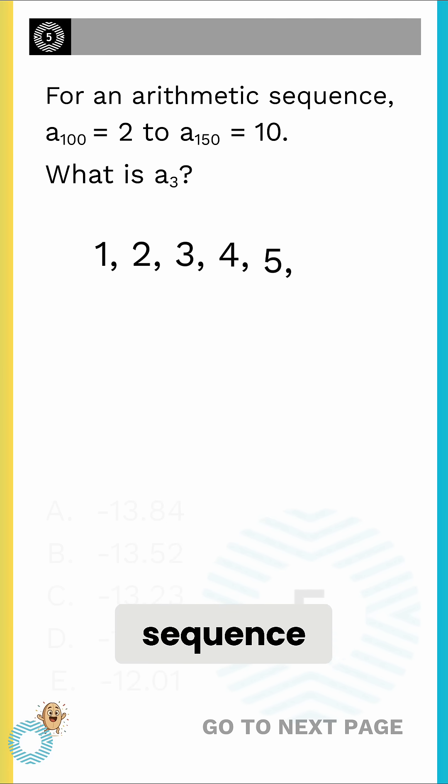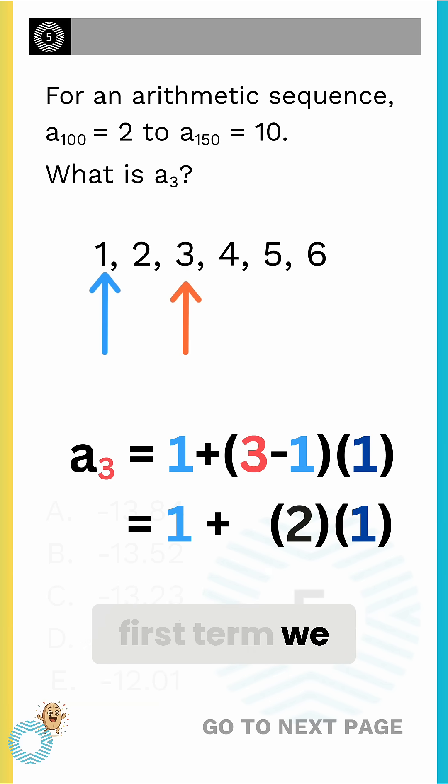Let's quickly test this concept with a simple sequence: 1, 2, 3, 4, 5, 6. Normally, to find the third term using the first term, we do the first term plus 2 times the difference, which is 1 plus 2 times 1, which equals 3.